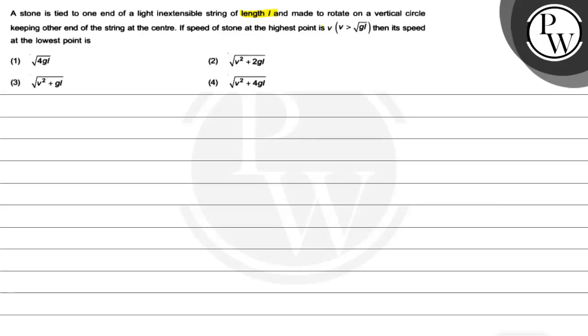If we have a speed at the highest point of V, we need to find the speed at the lowest point. Let's understand this question. In a circle, we have to rotate a stone. Its speed at the highest point.